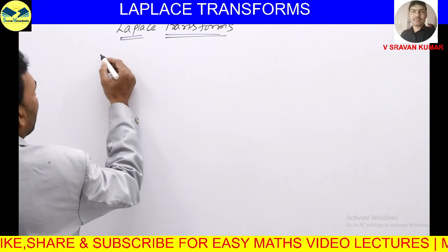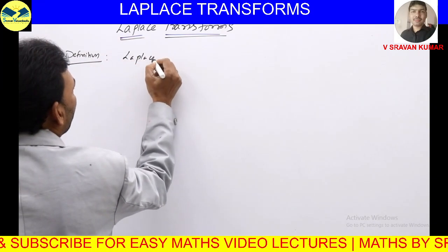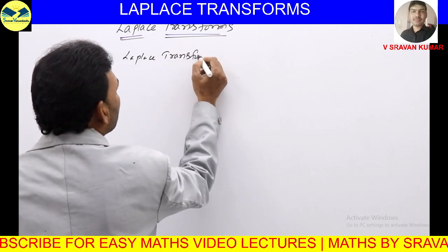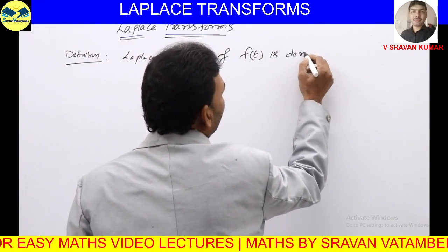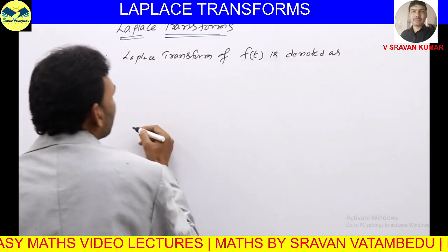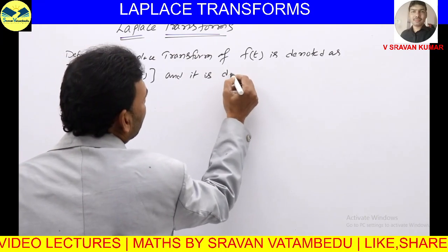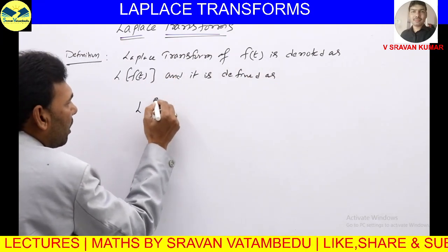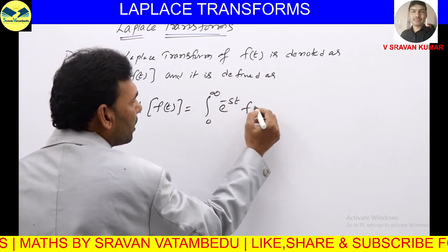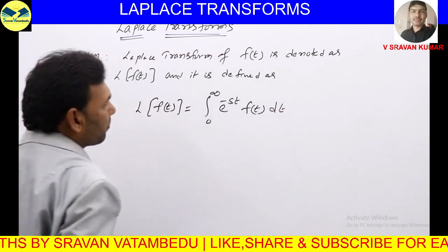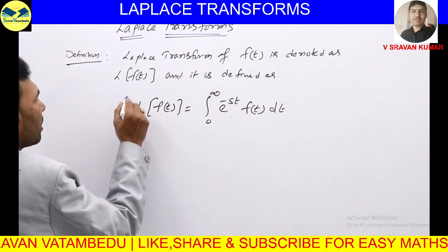How does it transform? It is defined like this. The Laplace transform of F of T is denoted as L of F of T, and it is defined as: L{F(t)} = integral from 0 to infinity of e^(−st) · F(t) dt. This is called the Laplace transform.